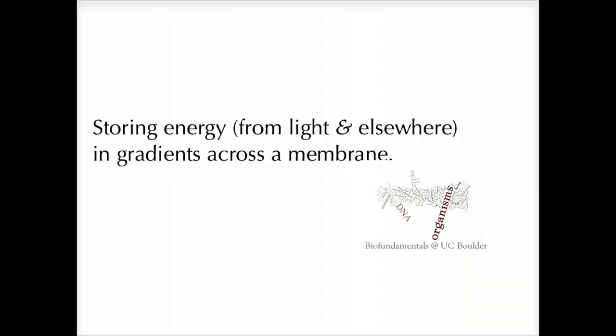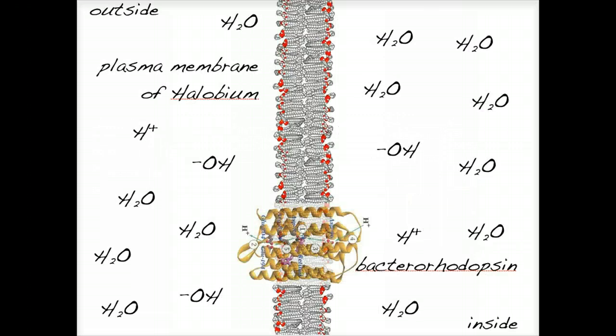Storing energy from light and elsewhere in gradients across a membrane. Many biological systems store energy in gradients across membranes. To get an idea of how this works, we're going to consider one of the simplest of these systems: the purple membrane of halobium.